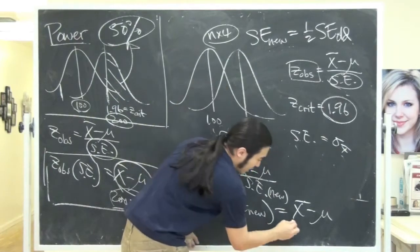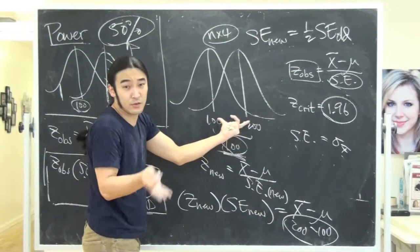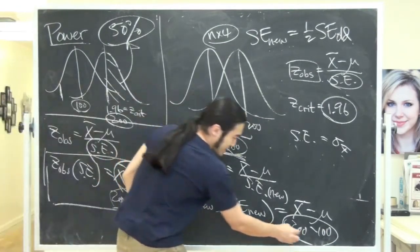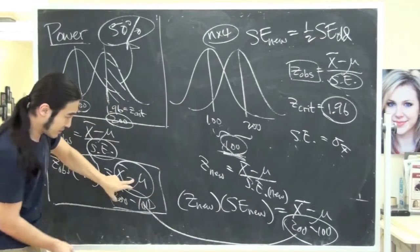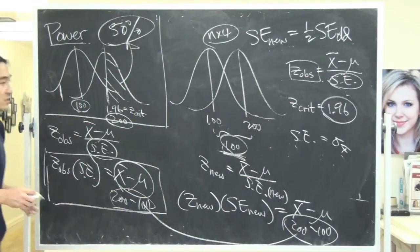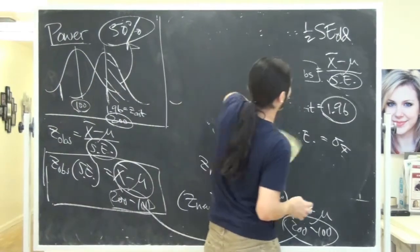But I can solve it again. Isn't it true that this is z new times the standard error, which is new, equal to x bar minus mu, right? But what am I trying to do with all these stupid equations? The x bar was 200, and mu was 100. You can clearly see the difference here was 100. Those numbers didn't change, and the difference here was 100.